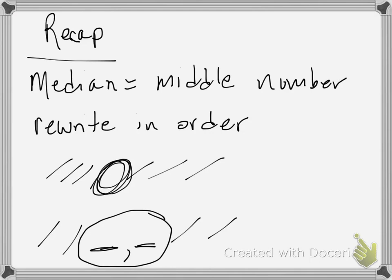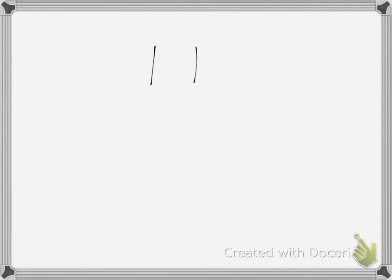However, if there is an even number of items, do your cross-off the same way, but you'll be left with two items. Take those two items and find the mean of them. That's median, folks — hope that helps. Watch the video a couple of times if needed. Talk to you soon.